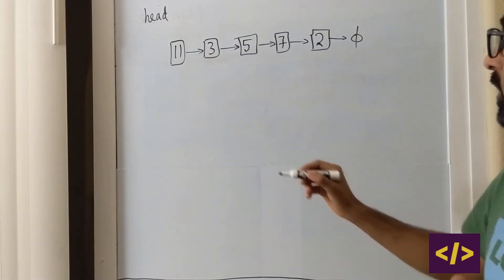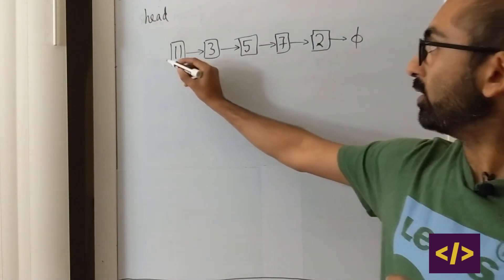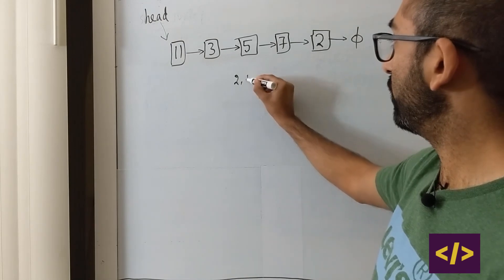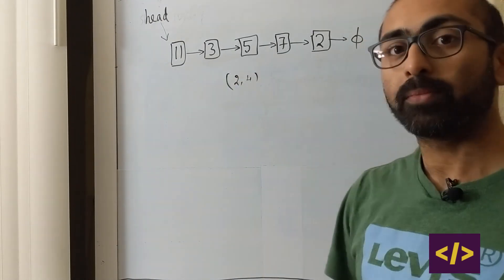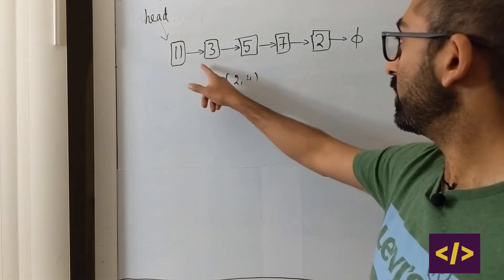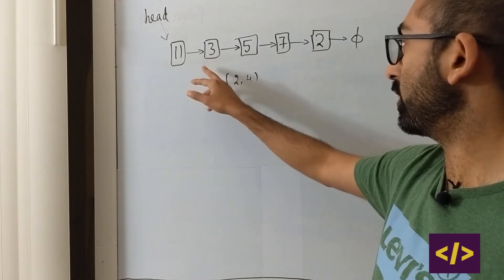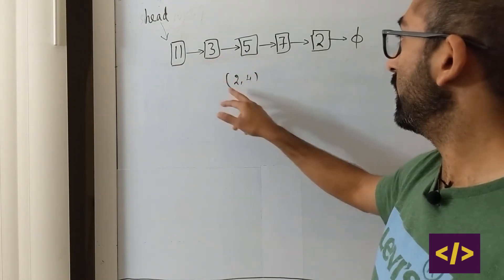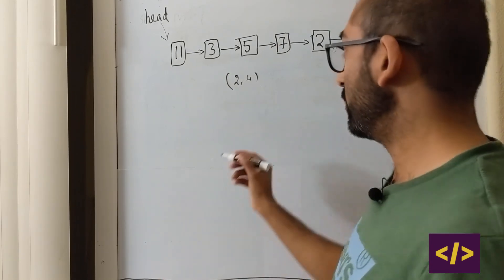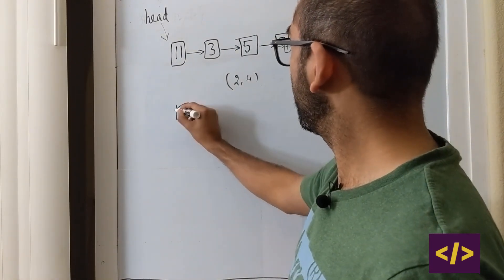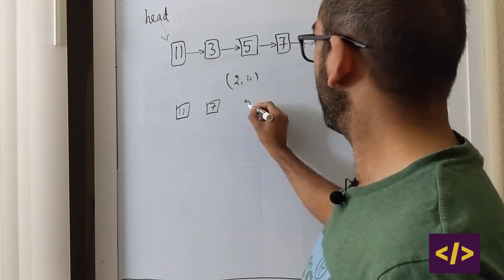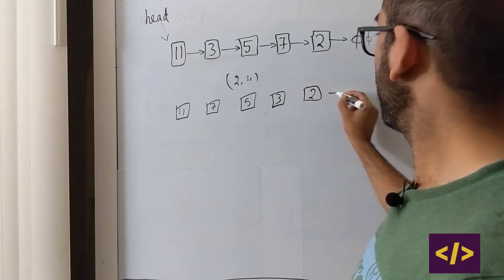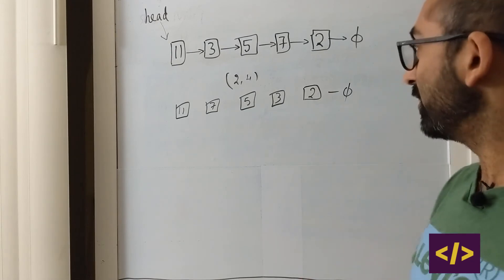Now, in this example, what we are given is the head, which points here, and we are also given two values. It is 2 and 4. So in this example, what the question requires you to do is that, take the whole linked list, take the elements that are starting from 2, all the way up to 4, so that will be 2, 3, 4, and then reverse them. So the end product should look something like this.